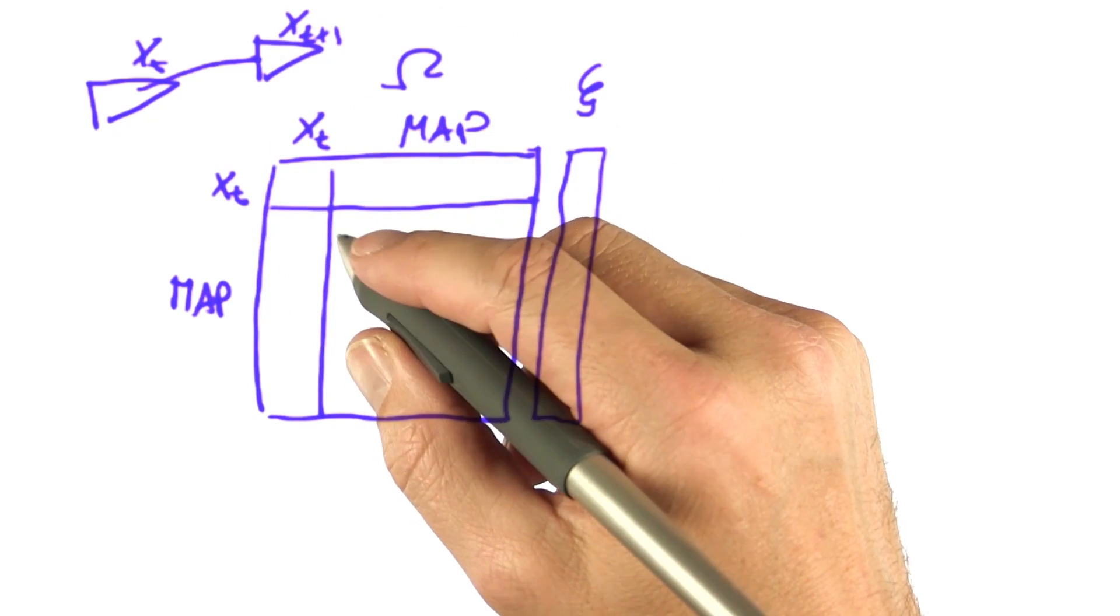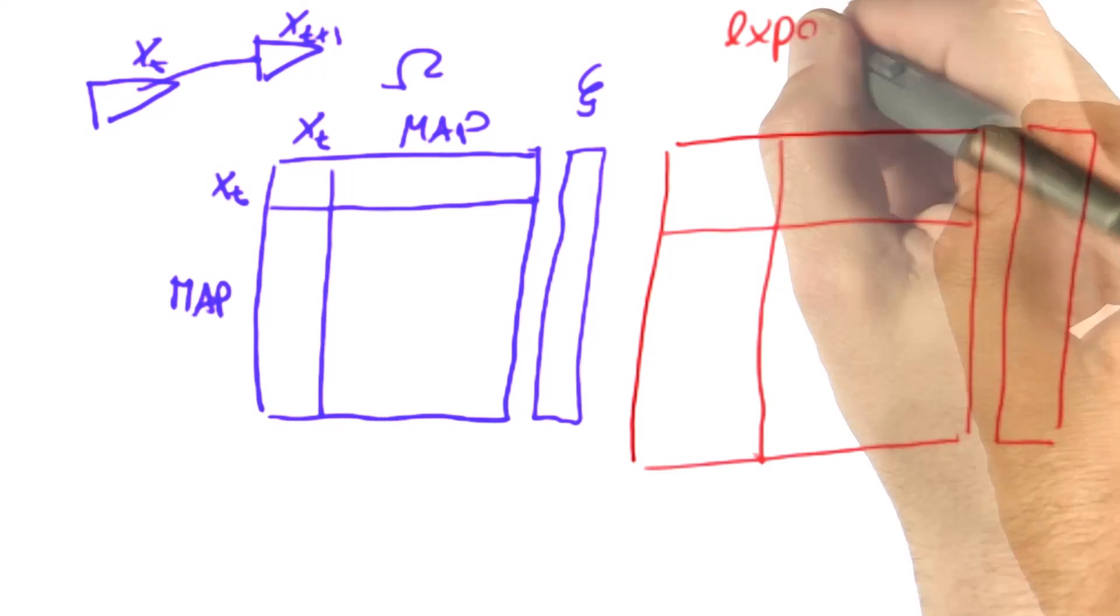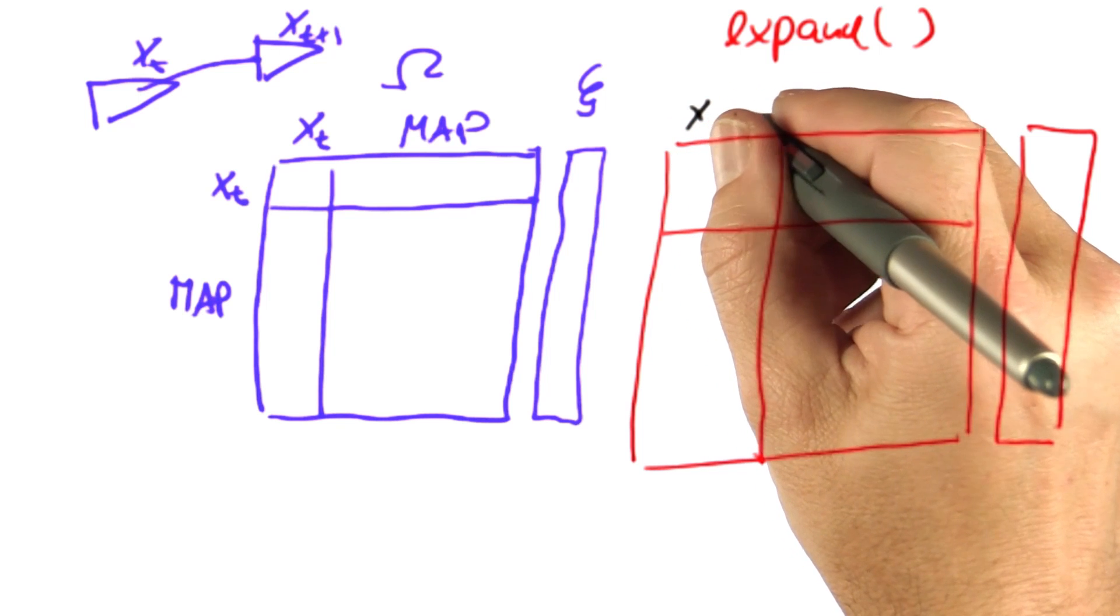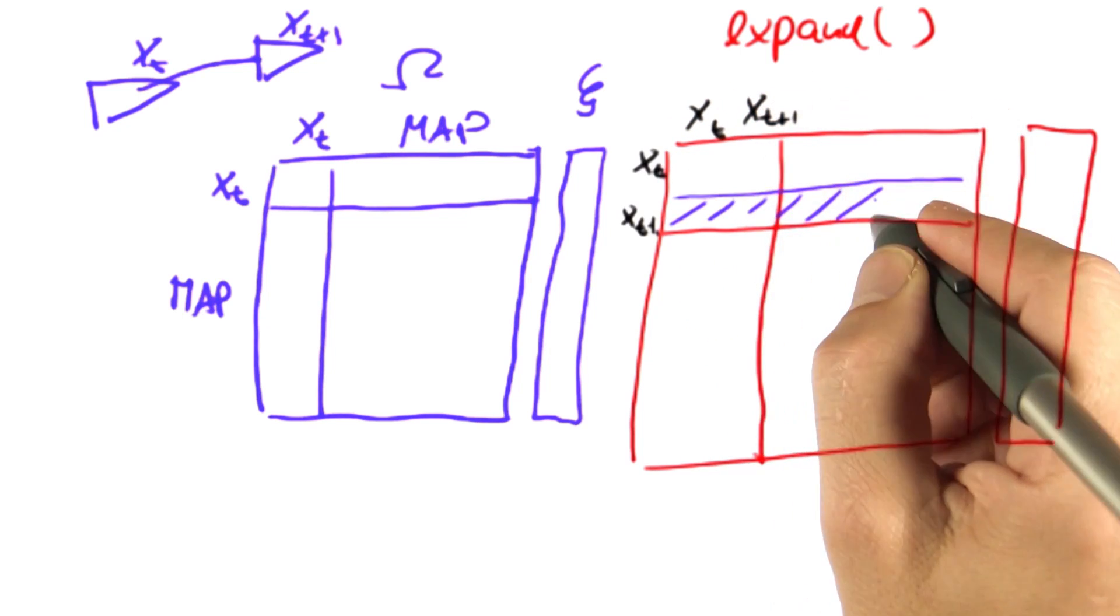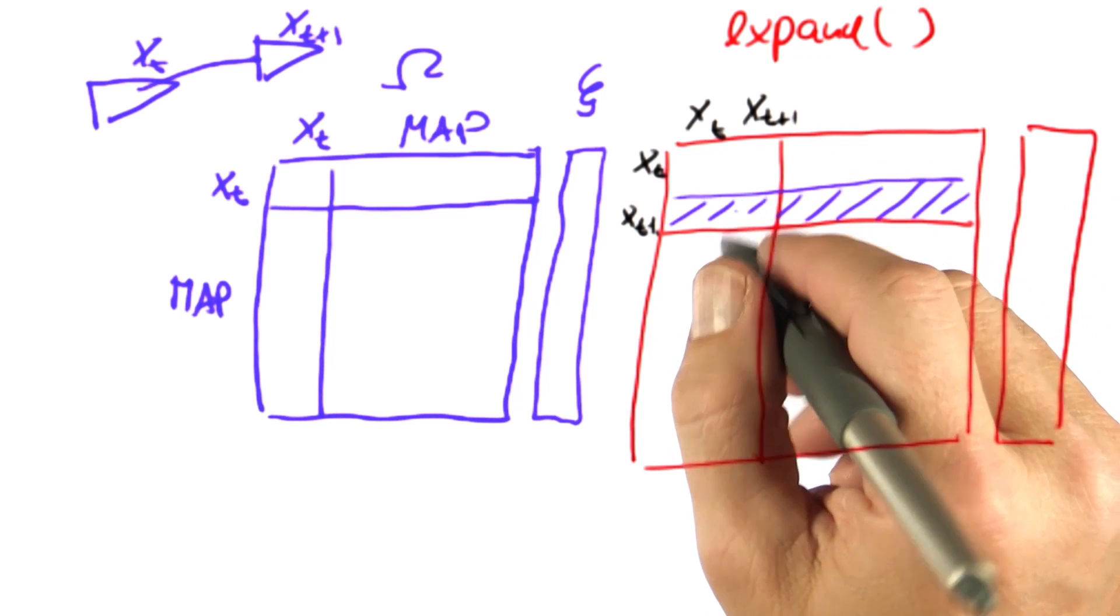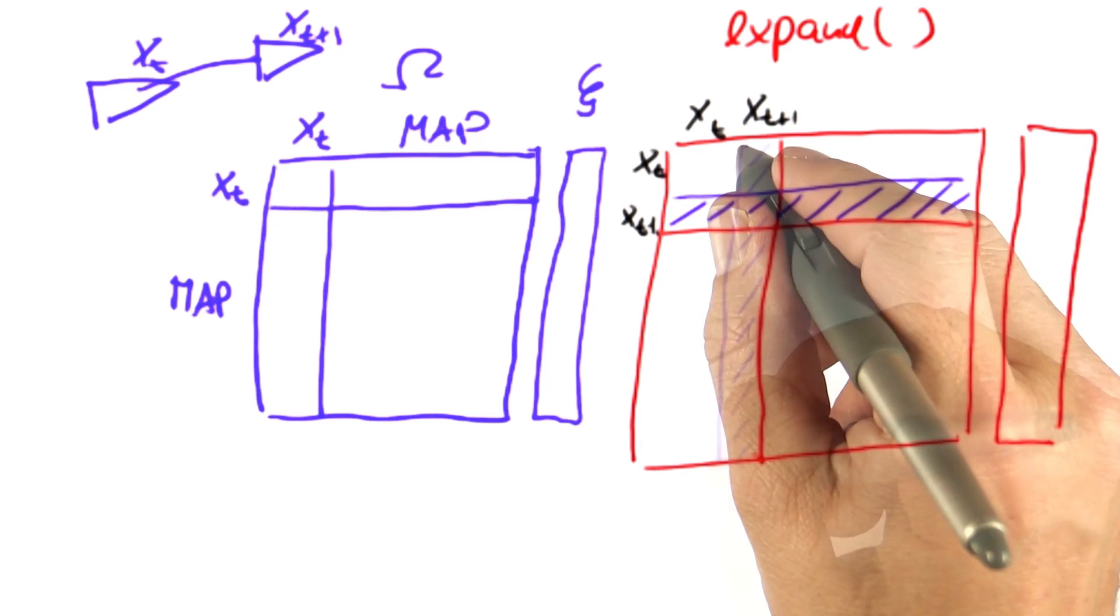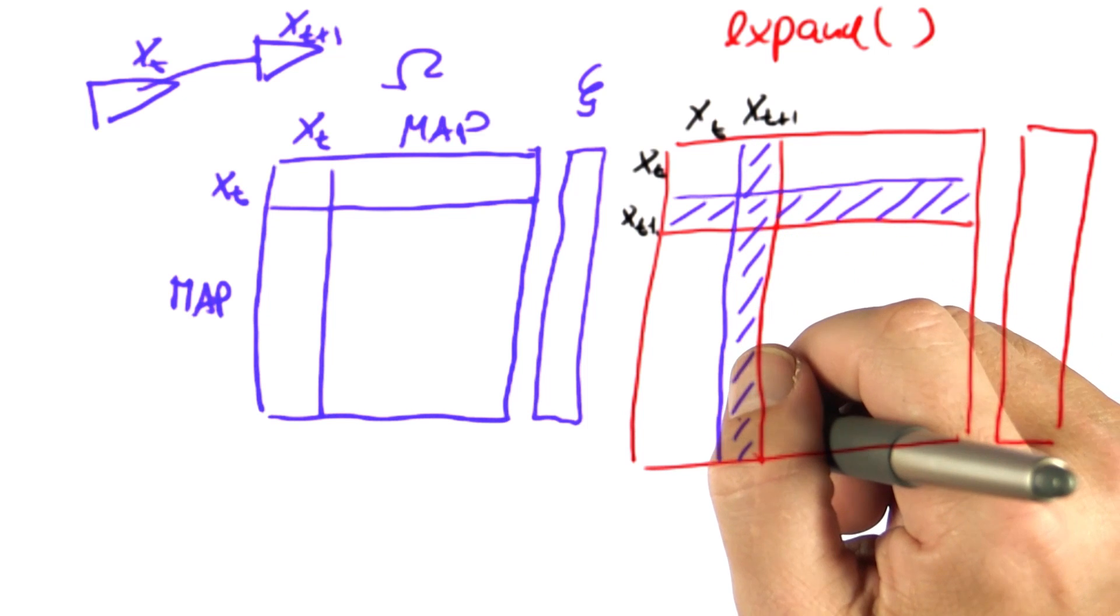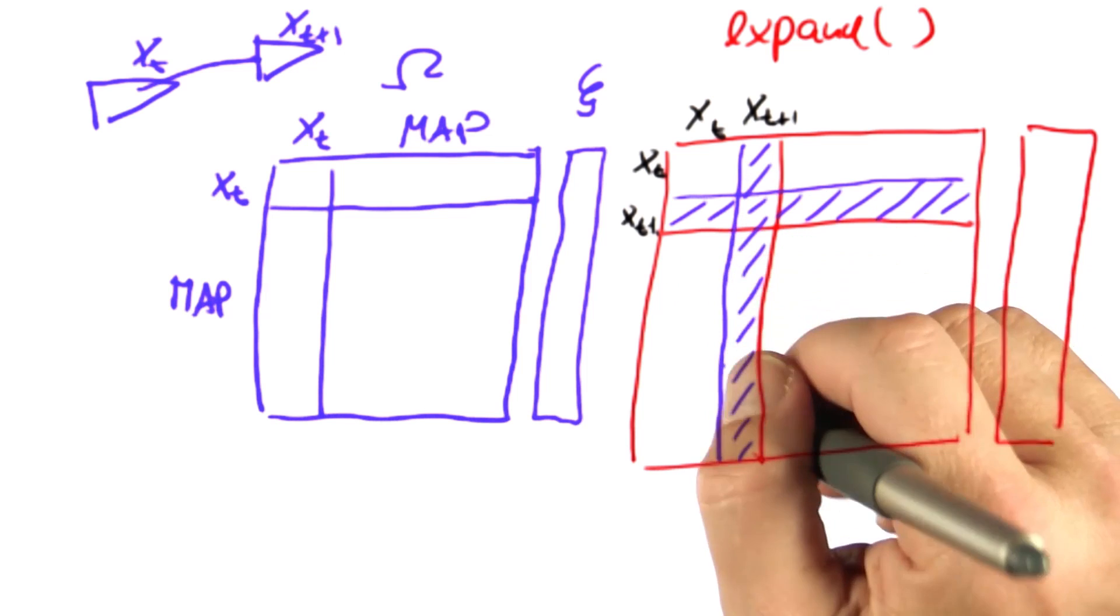Then we do exactly the following. We grow the matrix and the vector by using the expand function that you're already familiar with such that we now have space for our new position. The new area we added are these rows over here. It's a single row of numbers. Our position is one-dimensional. It's two rows of number. Our position is two-dimensional. And it's this column that, again, is just a single column if our position is one-dimensional. Otherwise, it's two-column. And we initialize those all by zero.